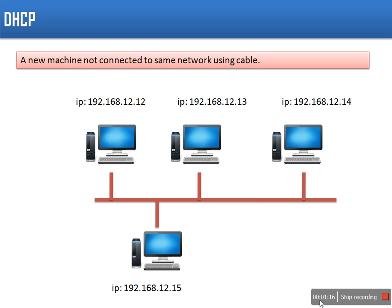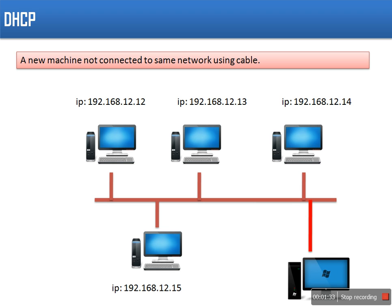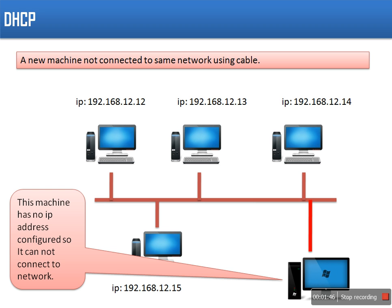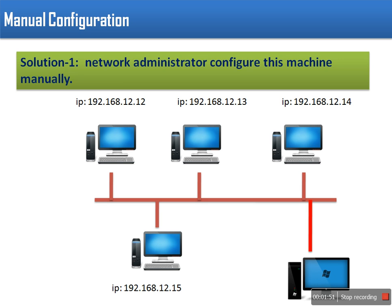Let's assume a new machine is just connected to the network using a wired cable. After connecting to the network, this machine has to be configured. When we say configured, it means network IP address, subnet mask, default gateway — all these details have to be filled in and configured on this machine. The first option is that the person responsible for handling networking will manually configure all the details on this machine, remembering which IP address has been allotted. So all details will be configured by this person — this is manual configuration.